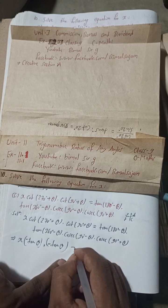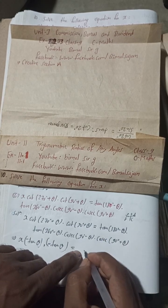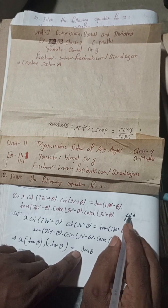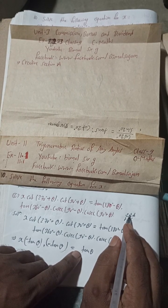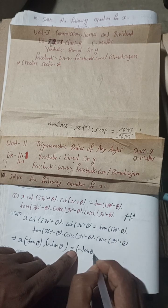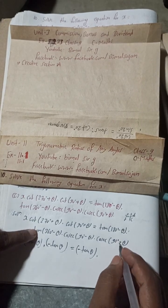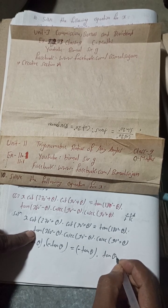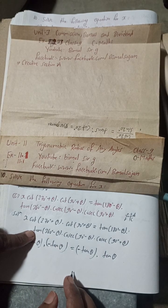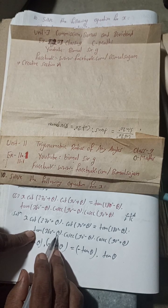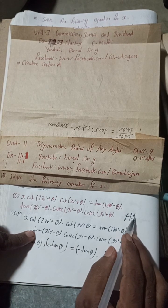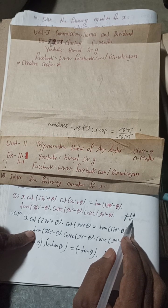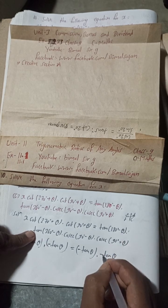For tan(180° − θ): tan becomes tan, and 180° − θ is in the 2nd quadrant where tan is negative, so tan(180° − θ) = −tan θ. For tan(360° − θ): tan stays as tan θ, and 360° − θ is in the 4th quadrant where cos is positive but tan is negative, so tan(360° − θ) = −tan θ.